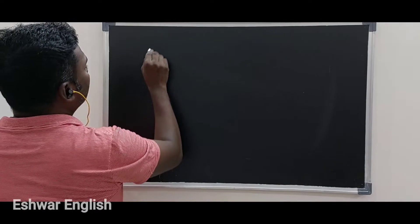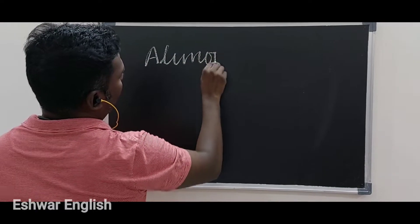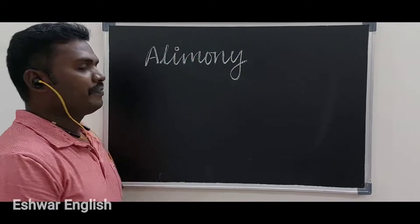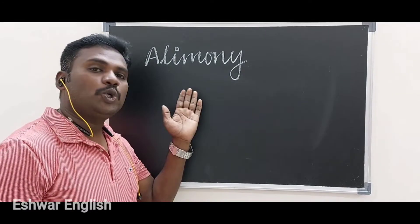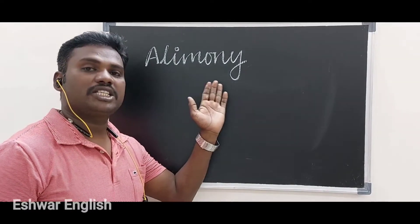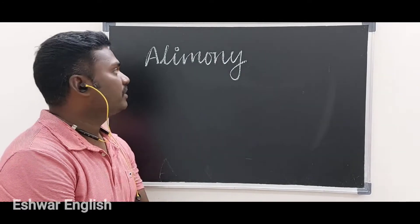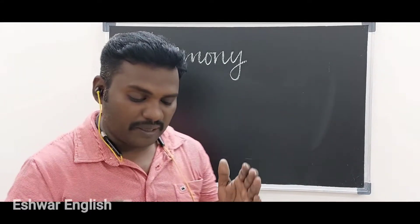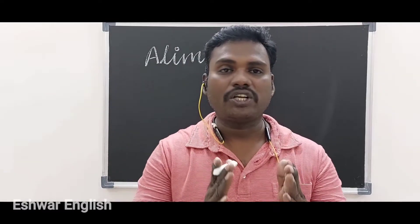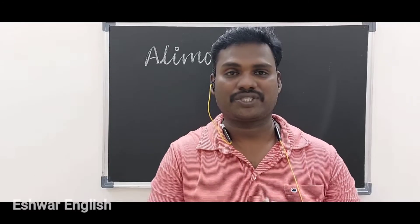The first word is 'alimony.' How to pronounce this word — alimony. Actually this word has been derived from the French language, which means the money paid regularly under the order of a court by a man or woman after getting a divorce.